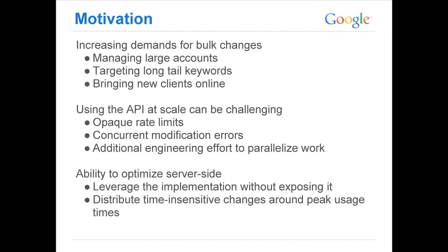We're seeing definitely an increasing demand from our customers for bulk changes — lots of operations, very large accounts or long tail keywords. And the other thing which I'm sure almost everyone here has run into is that using the API at scale has its challenges, specifically on rate limiting. We've got a lot of questions about that. Additionally, there are just some backend limitations and errors you'll run into like concurrent modification that are kind of out of your control — something happened on our end, we couldn't complete that request, you'd have to try again. It just becomes frustrating sometimes to deal with all these little edge cases.